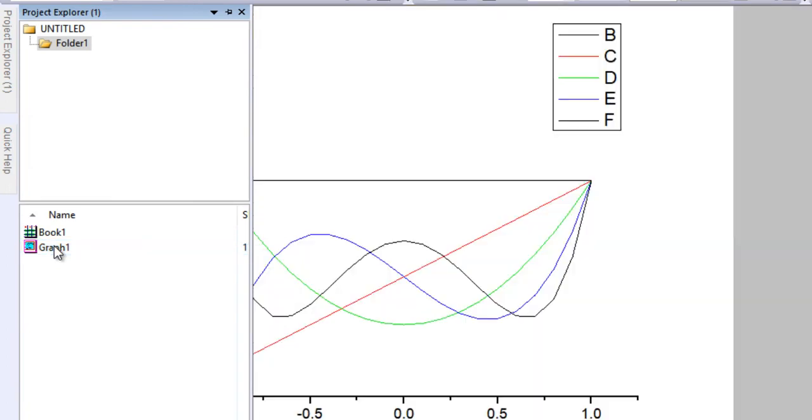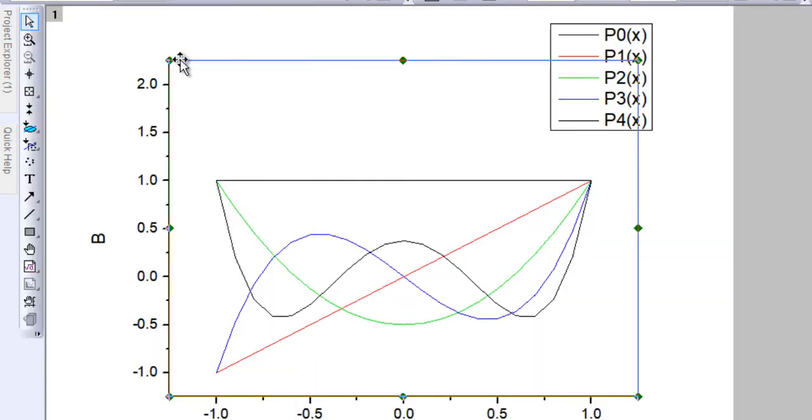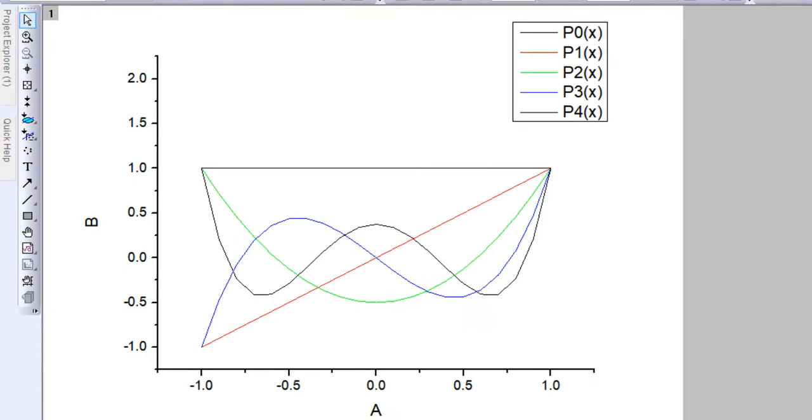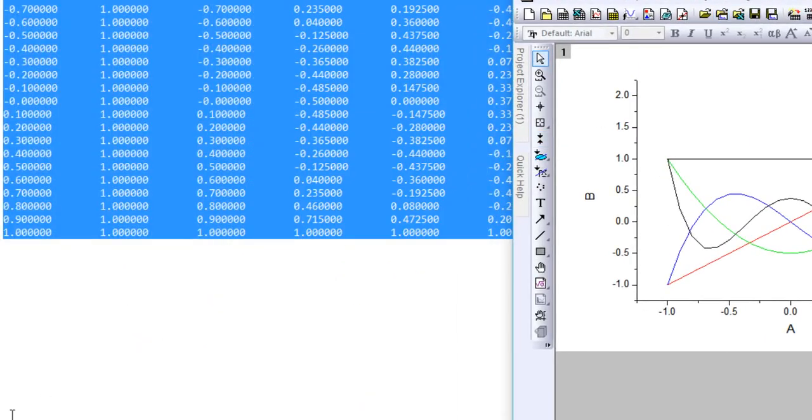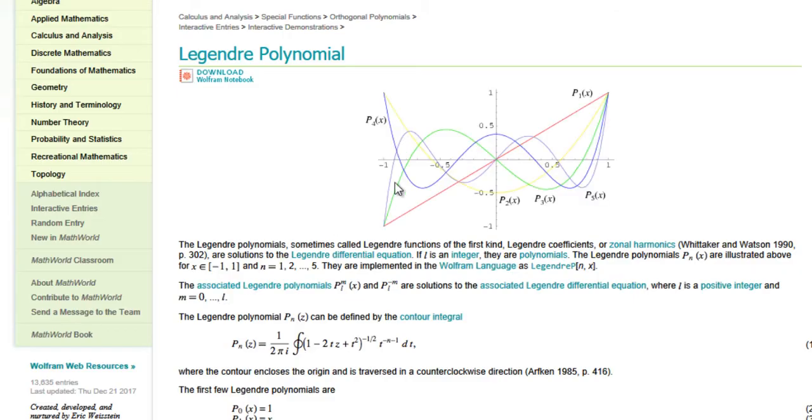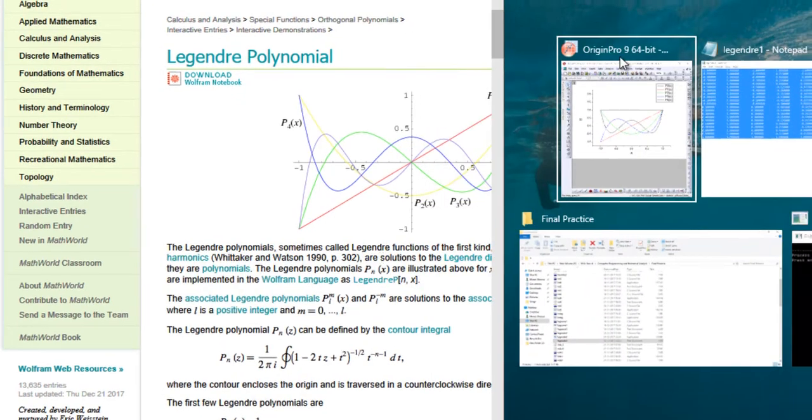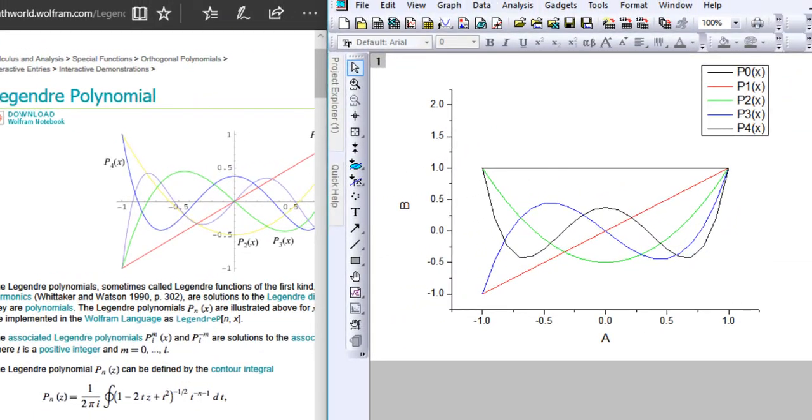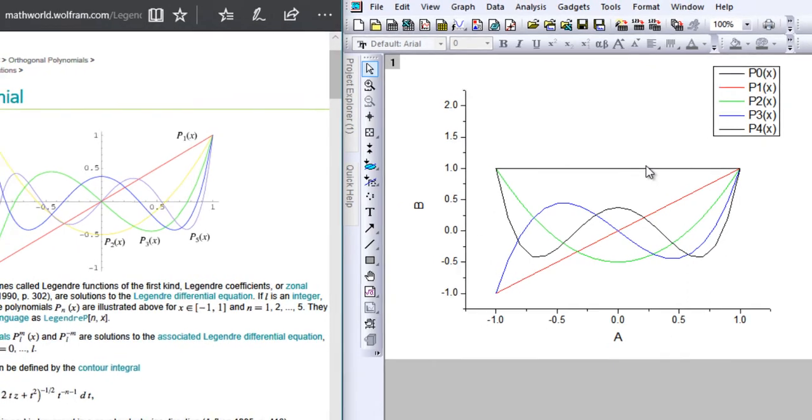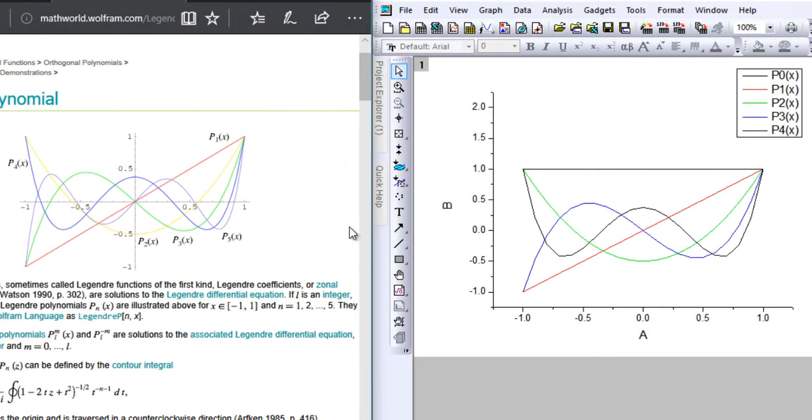Coming back to the graph, now you can see that we have this graph right here and we can compare it to the one on the Wolfram page. We have P0, which is a straight line at 1. They have not plotted it. Then we have P1, which is a red line going straight from the origin. We have that line right here. Then we have P2, which is a yellow line in the Wolfram plot, and in my case it is the green line. Both are pretty similar.